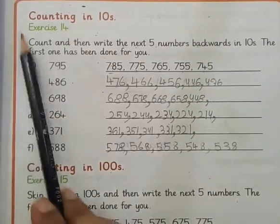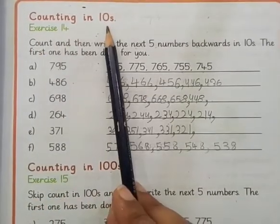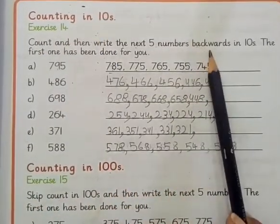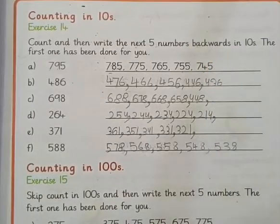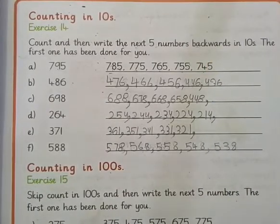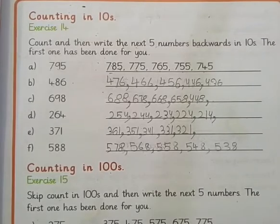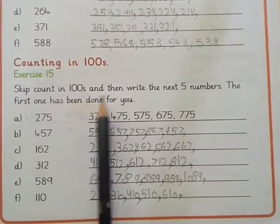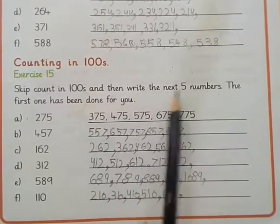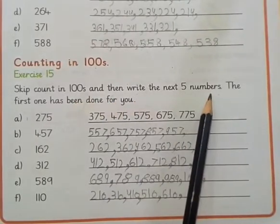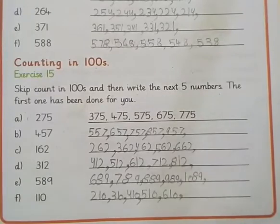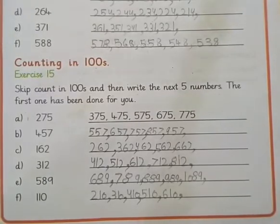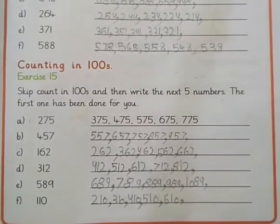Our last topic was counting in tens backward — we had to count in tens and backward. Today our topic is counting in hundreds and then write the next five numbers. You have to add it. Backward means you have to give less.